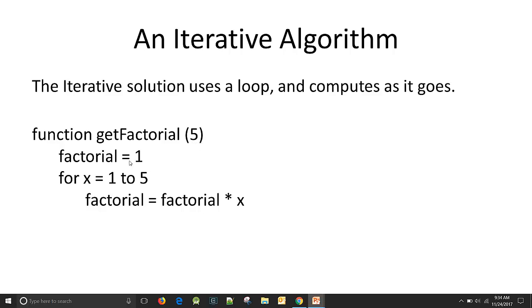We'll first set factorial equal to 1. This is going to be our running total. For x equals 1 to 5. So that's a loop. A loop that runs from 1 to 5 or 1 to this number. And then we say factorial equals factorial times x.